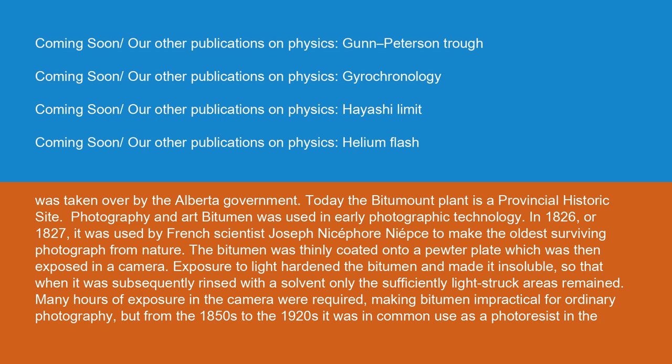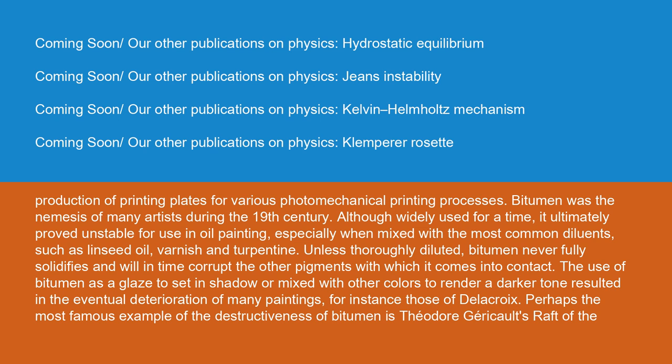Bitumen was used in early photographic technology. In 1826 or 1827, it was used by French scientist Joseph Nicéphore Niépce to make the oldest surviving photograph from nature. The bitumen was thinly coated onto a pewter plate, which was then exposed in a camera. Exposure to light hardened the bitumen and made it insoluble, so that when subsequently rinsed with a solvent, only the sufficiently light-struck areas remained. Many hours of exposure were required, making bitumen impractical for ordinary photography, but from the 1850s to the 1920s it was in common use as a photoresist in the production of printing plates for various photomechanical printing processes.